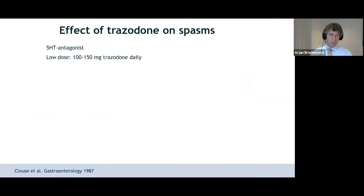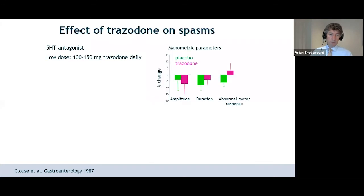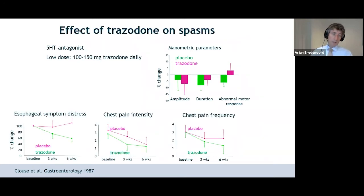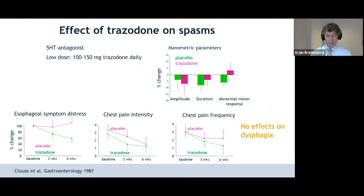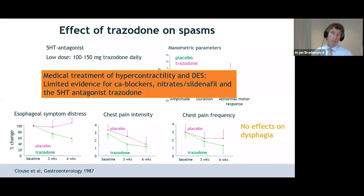What about trazodone, a 5-HT antagonist usable in low dosages? There's a mixed response on esophageal contractility. Esophageal symptoms and chest pain intensity and frequency improved with trazodone, but only to a small degree, and there were no effects on dysphagia. The effects are limited and not really encouraging.